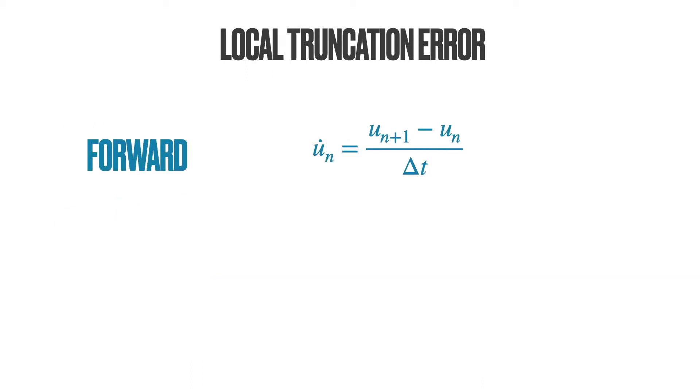Here is the forward Euler approximation of the velocity at a certain time n. Let us compare this approximation with a mathematically true solution at time step n. We can use the Taylor series to expand the displacement around the time n to obtain an abstract mathematical representation of the true solution.